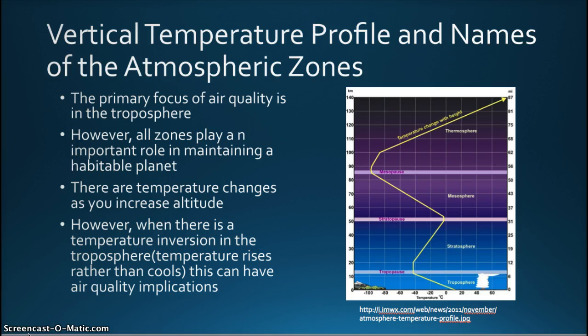The next vertical layer begins the upper atmosphere, and the initial zone here is the stratosphere. In this zone, that goes from about 6 to 30 miles in height, the temperature rises with elevation.